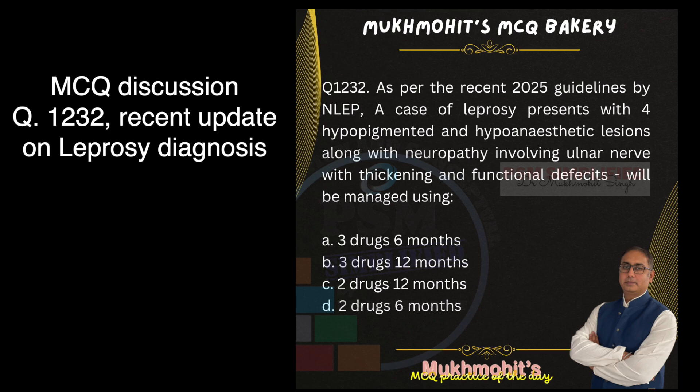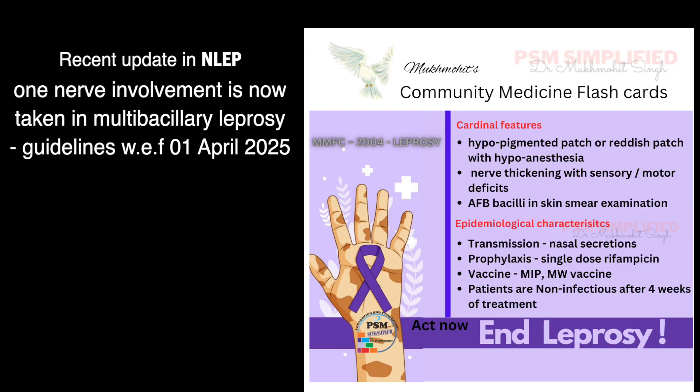The question is: a case of leprosy presents with four hypopigmented and hypoanesthetic lesions along with neuropathy involving the ulnar nerve with thickening and functional deficits. This case will be managed by three drugs for six months or 12 months, and two drugs for six months and 12 months. Let's have a quick crash review of leprosy that you need to remember for your exam.